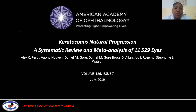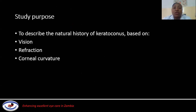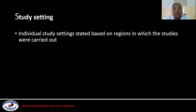Moving straight into our journal article: our journal is from the American Academy of Ophthalmology, Volume 126, Issue 7, published in July of 2019. The title is 'Keratoconus Natural Progression,' a systematic review and meta-analysis of 11,529 eyes. The study purpose was to describe the natural history of keratoconus, and the authors based this on the vision, refraction, and corneal curvature of patients included in the studies. This is a meta-analysis, so studies were coming from various regions of the world, and the study setting was stated in the individual studies included in the meta-analysis.